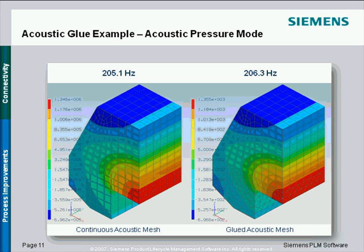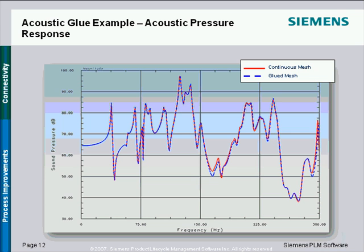On the left we have an acoustic volume with a continuous mesh, and on the right an acoustic volume with a glue mesh. You can see the lower half is modeled with tet elements and the upper half with hex. If you look at the contour of the modal pressure result, they are almost identical. If we look at a response calculation from the glue mesh model and the continuous mesh model, we get almost identical results, showing that we can get very accurate results using the glue contact with an acoustic mesh.